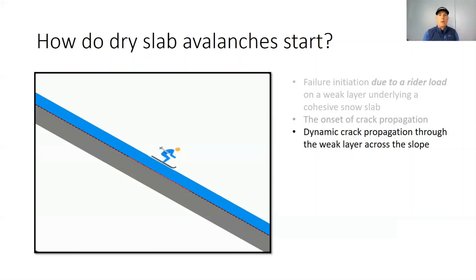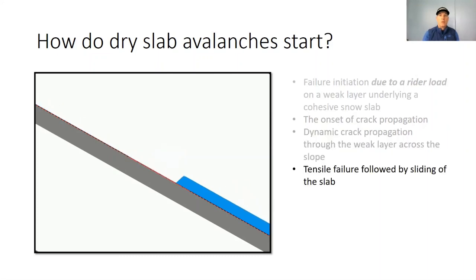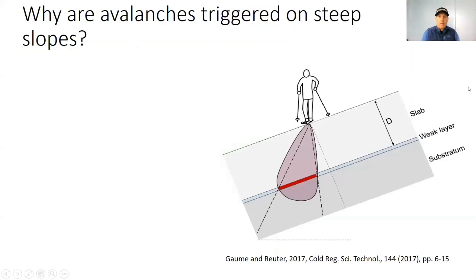As the crack propagates through the weak layer, it undercuts the slab support, and if gravitational force overcomes friction, the snow slab eventually fractures and slides. The intensity and size of the skier load on the weak layer dictates the initial failure. The length of the weak layer failure under the skier is called the skier crack length. In this image, the rail bulb illustrates the contour of the shear stress under the skier. If the skier crack length is larger than the critical cut length, crack propagation along the weak layer starts.